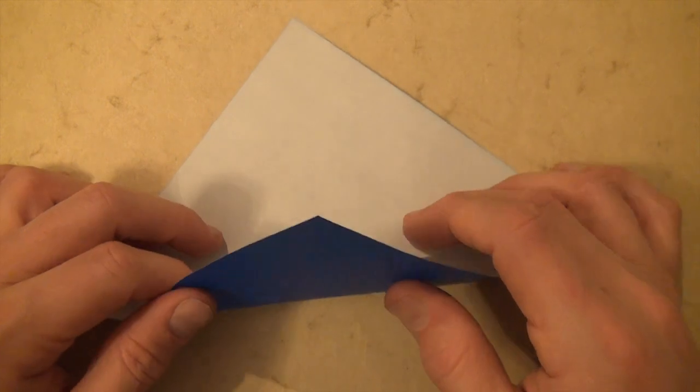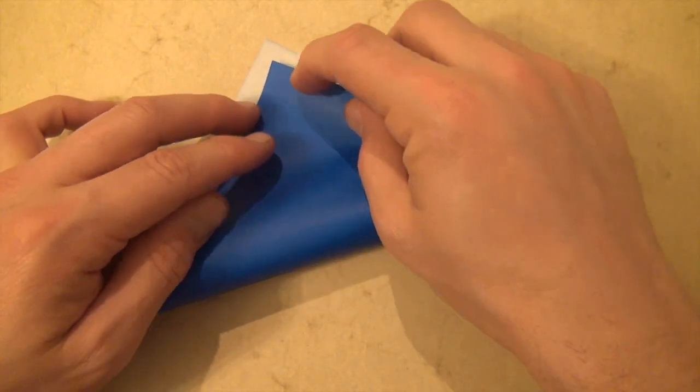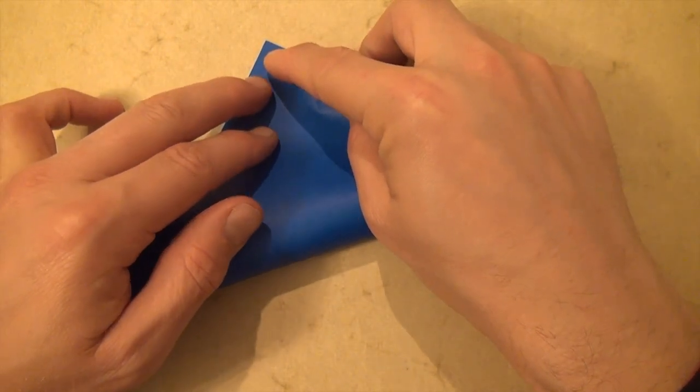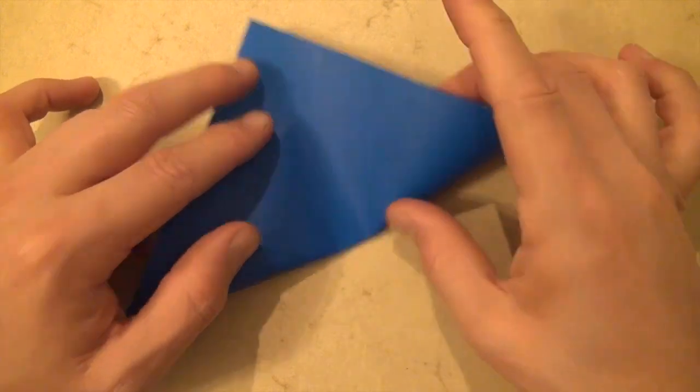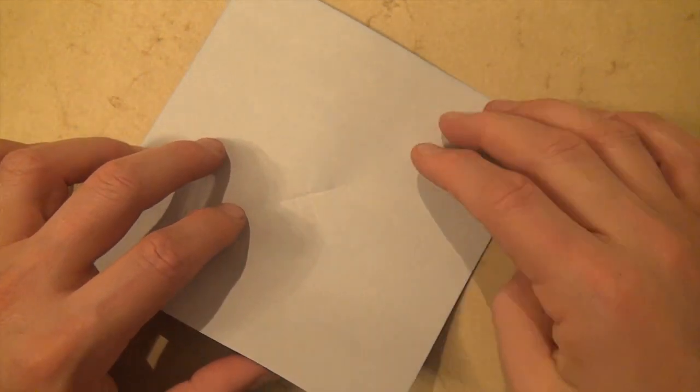So, let's rotate, and now let's fold in half this way, and once again, just make a little pinch right in the middle. So, that way we have an X of creases.